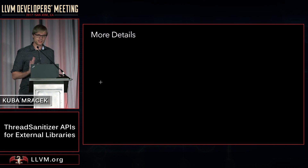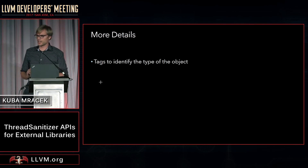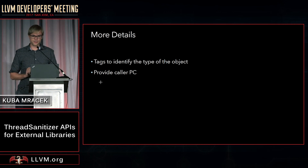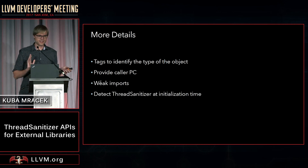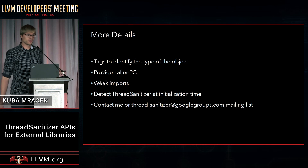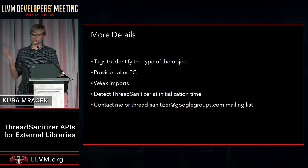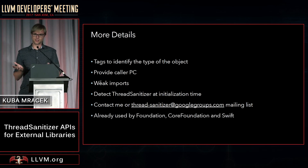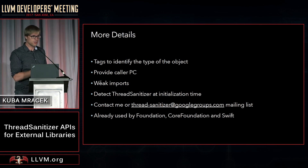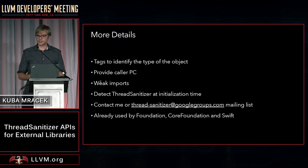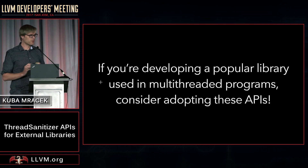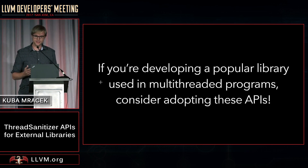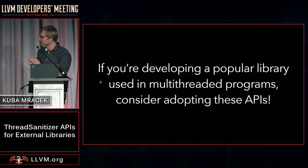There are a few more details I don't have time to go into, like tags you can use to identify objects, providing a caller PC, and using weak imports to detect ThreadSanitizer. If you want to know more, please contact me or the ThreadSanitizer mailing list. This is already being used by Foundation and CoreFoundation on macOS, and also by Swift to find bugs in user code when programs use value types in a thread-unsafe way. If you are developing a popular library used in multi-threaded programs, please consider adopting these APIs, because they will help your users find more bugs in their code.